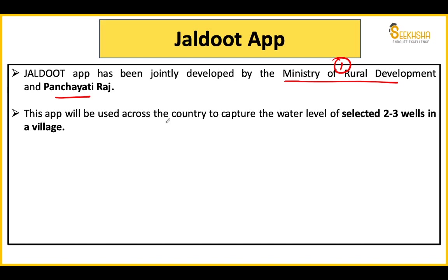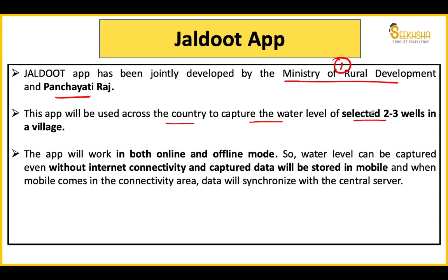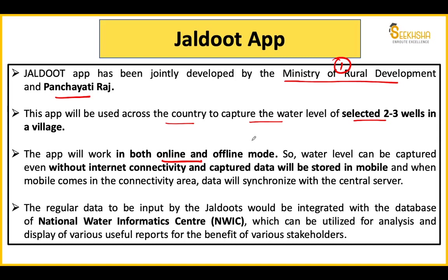The Jaldoot app will be used in the whole country to capture the water level of selected 2-3 wells in a village. It will work in both online and offline mode — you can capture the water level without internet connectivity. The captured data will be stored in your mobile, and when you are in a mobile connectivity area, it will automatically synchronize with the server, ensuring proper records even in low-connectivity areas.